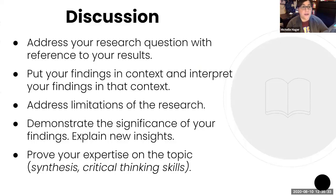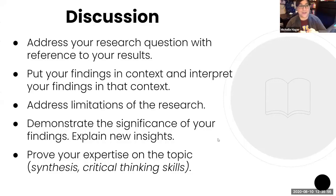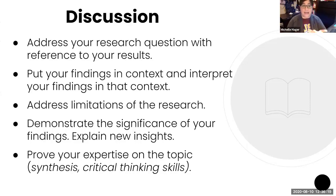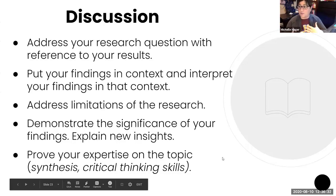Discussion is really one of the most important parts of a graduate research paper because this is where you do some analysis. You address your research question with reference to your results, put your findings in context, and offer your interpretation of what you discovered. You do want to address the limitations of your research — this is super important in grad school. Students sometimes don't want to do this because they think acknowledging a limitation means their research was unsuccessful, which is not true. Every piece of research will have some sort of limitation, such as a small sample size. You're also demonstrating the significance of your findings, new insights, and proving your expertise on the topic by showing you've synthesized the literature and critically analyzed your own research.